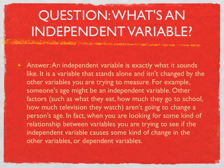An independent variable is exactly what it sounds like. It's a variable that stands alone and isn't changed by the other variables you're trying to measure. For example, someone's age might be an independent variable. Other factors, such as what they eat, how much they go to school, and how much television they watch, aren't going to change a person's age. When you're looking for some kind of relationship between variables, you're trying to see if the independent variable causes some kind of change in the other variables or dependent variables.